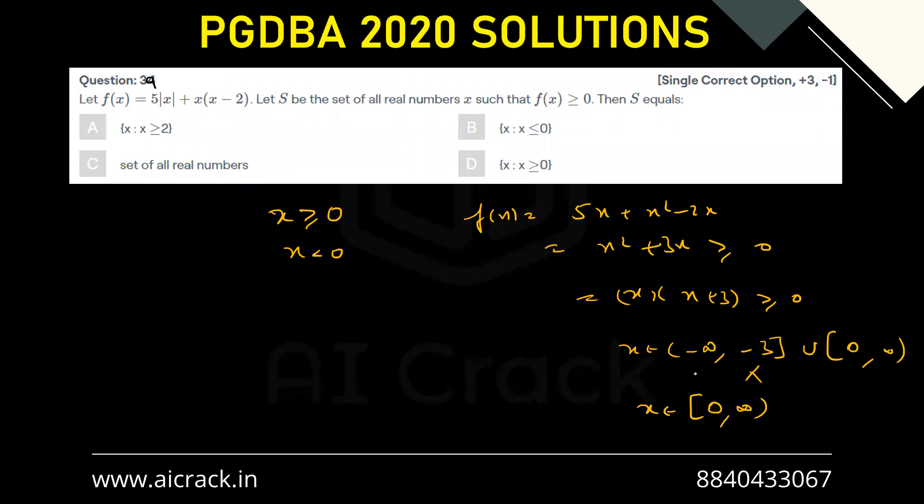Now for the second condition, f(x) = -5x + x² - 2x because x < 0 and the modulus opens with a negative sign. That gives x² - 7x, which is x(x - 7) ≥ 0.